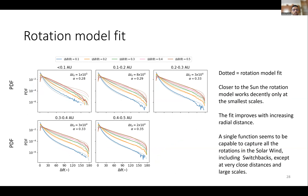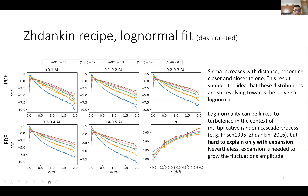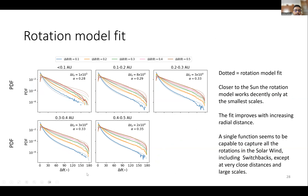We also test the rotation model fit for δθ directly, and again the model doesn't work perfectly when we are close in but improves with increasing radial distance. This has implications for switchbacks, because we are capable of fitting the full distribution of rotations with a single function. This seems to suggest that switchbacks are just part of the distribution of magnetic field fluctuations rather than a separate population.